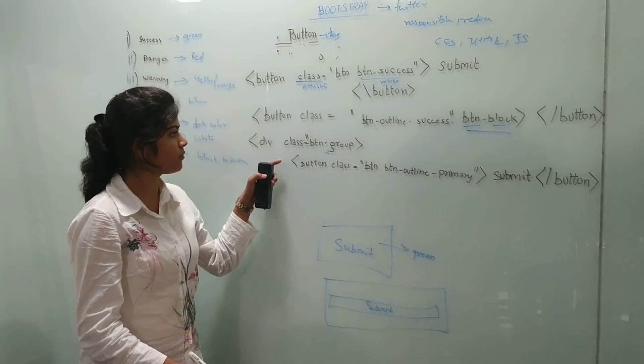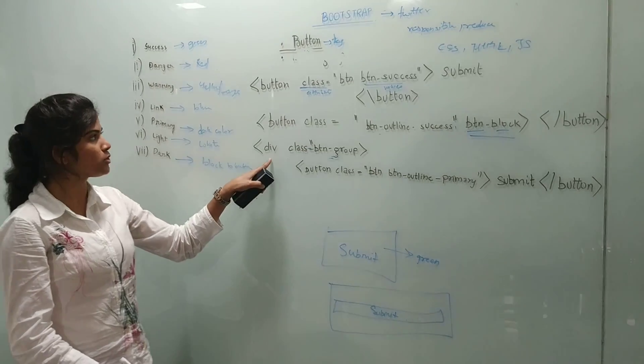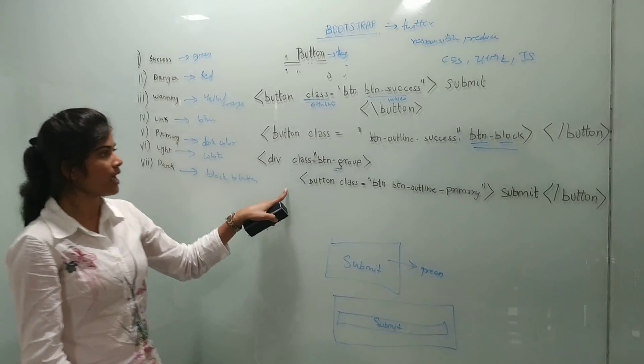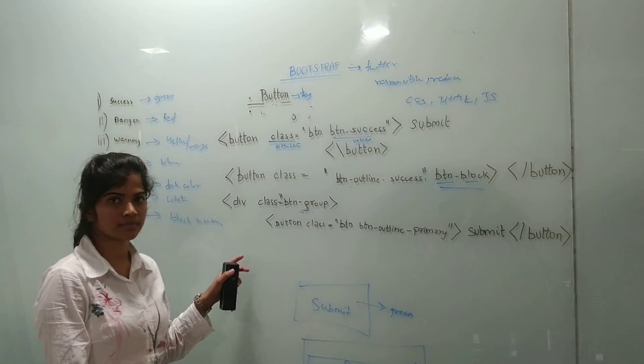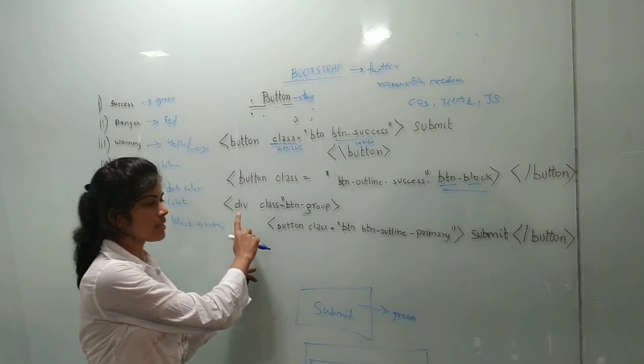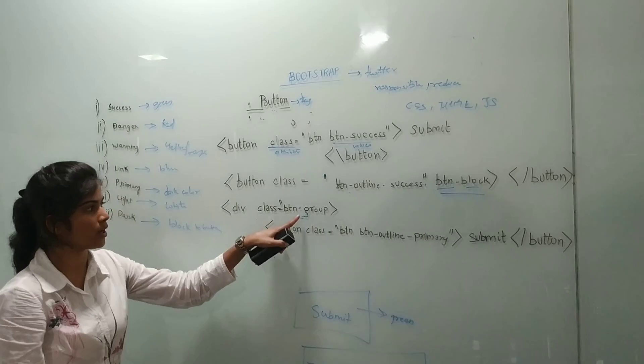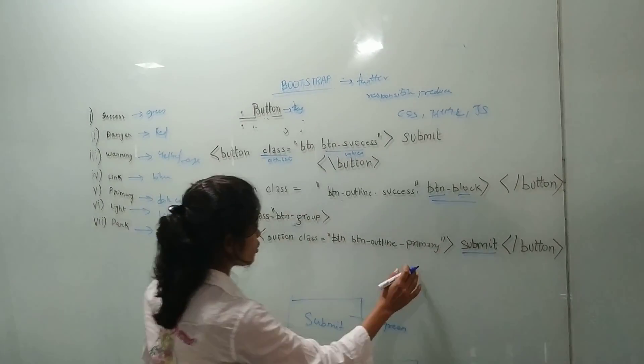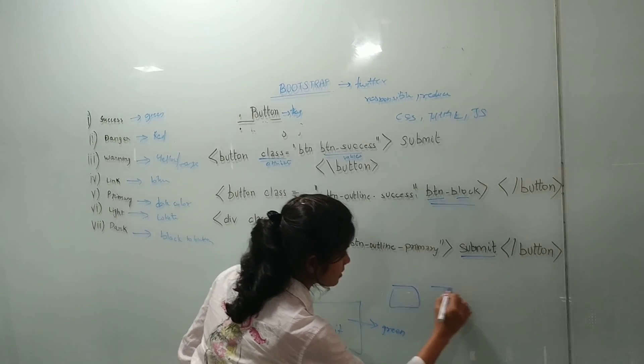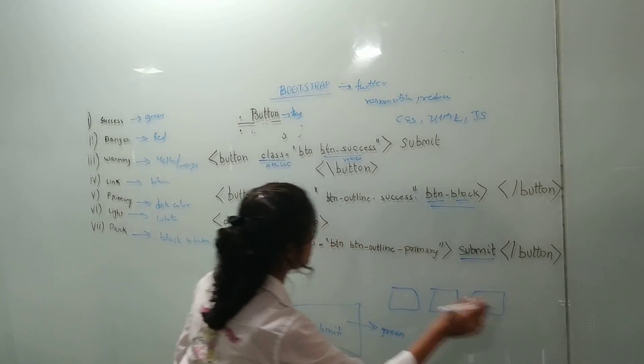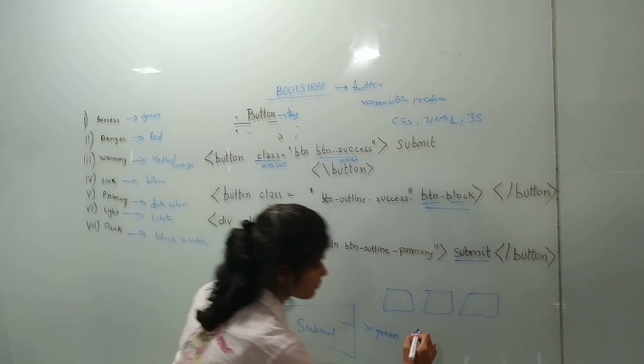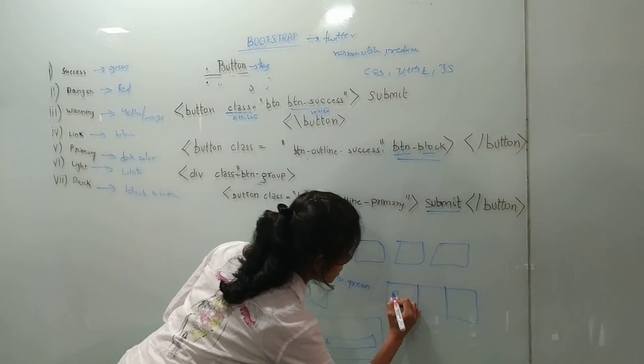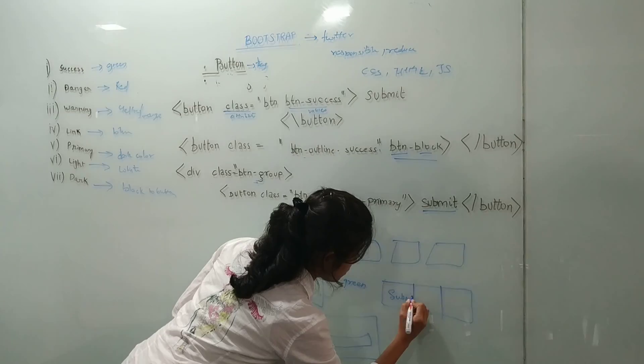And for button group we use div as a tag. And here this div tag is used for making the button group. So here we have used submit. So whenever these buttons are created by using the button group, they are collapsed and all the buttons will get merged.